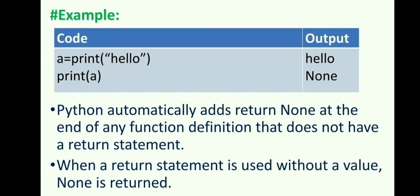In this example, print("hello") is assigned to the variable a. The first statement does two things. It will assign the return value of the print function to the variable a and display the string hello on the screen as an output.